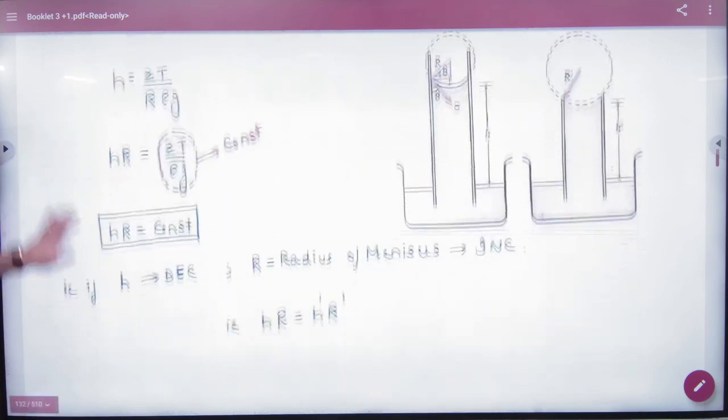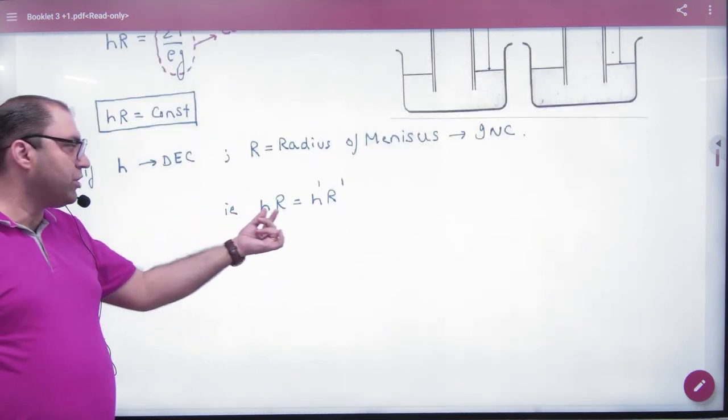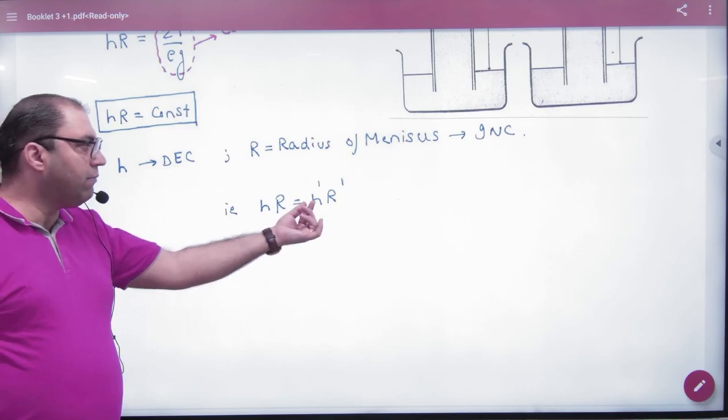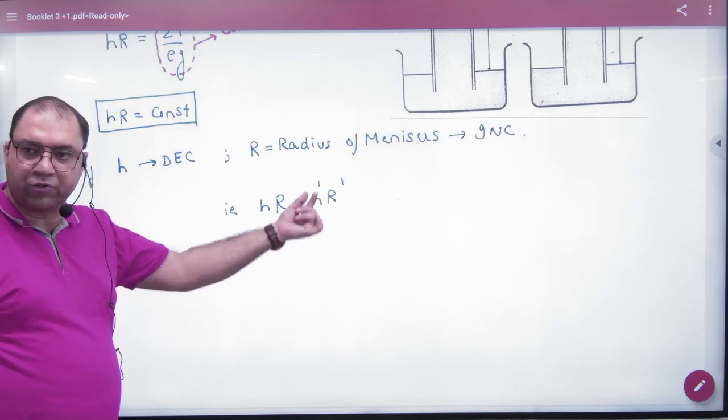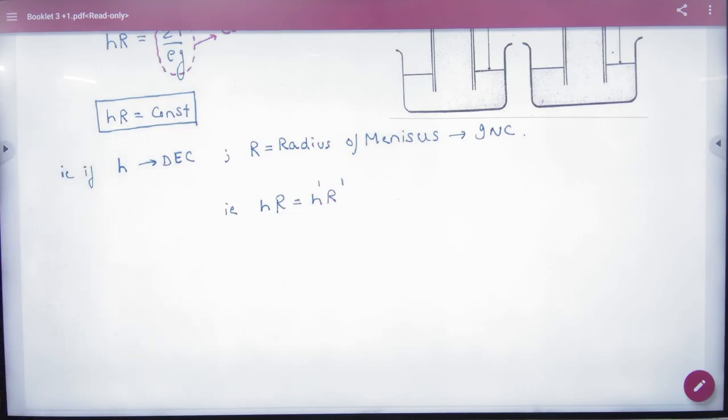So you can say that if the height is h, the radius of the meniscus is R. If the height is h dash, the radius of the meniscus is R dash.